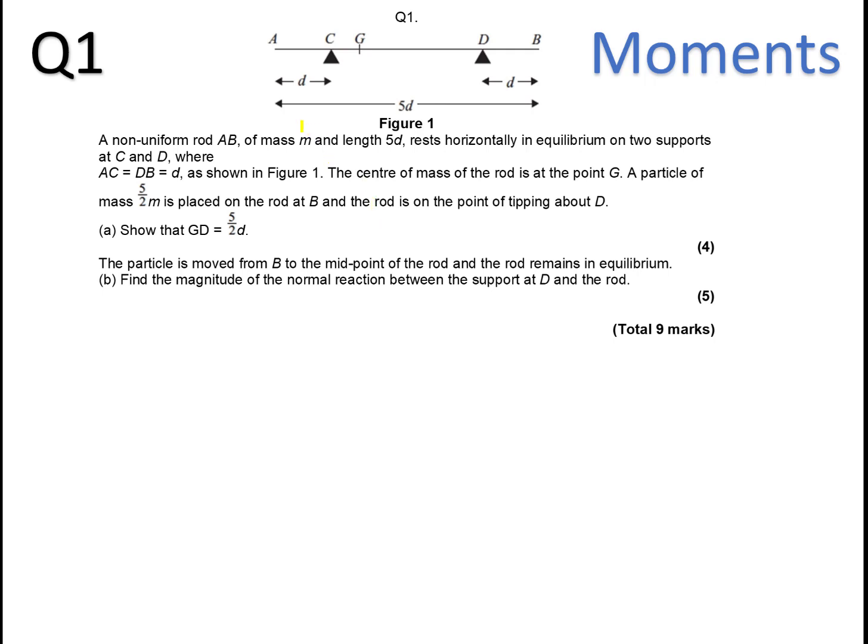Okay, let's go through this moments exam question. A non-uniform rod AB of mass M and length 5D rests horizontally in equilibrium on two supports at C and D.